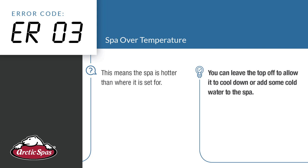ER03 — spa over temperature. This means that the spa is hotter than where you have it set. You can leave the top off to allow it to cool down, or add some cold water to the spa.